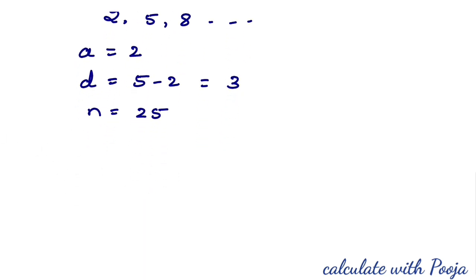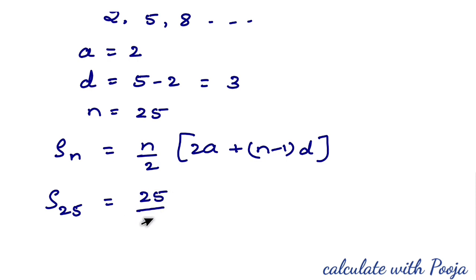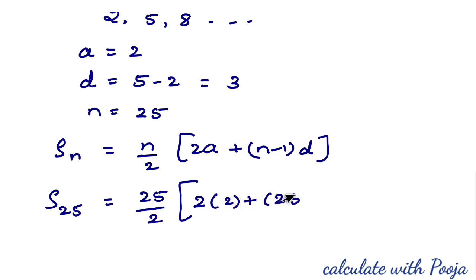Now we substitute into the formula. Sₙ = (N/2) × (2A + (N−1) × D). So S₂₅ = (25/2) × (2×2 + (25−1) × 3).